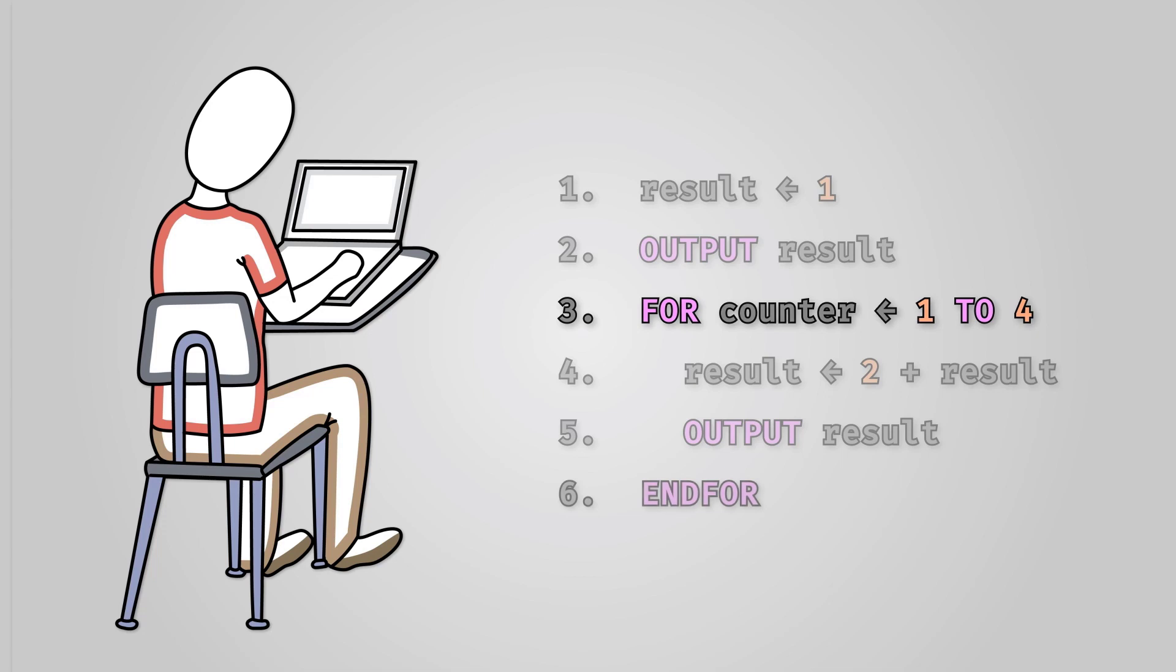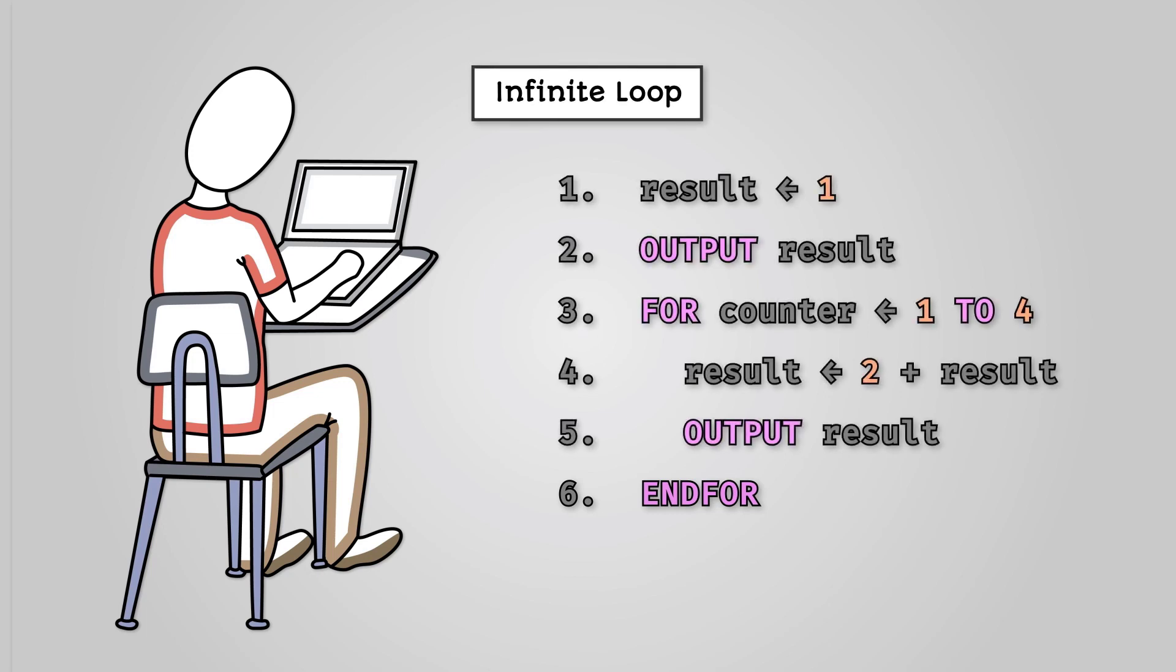Then on line 6 we have the end for statement. At this point the program adds 1 to the counter variable and loops to the beginning. If we didn't do this our program would be stuck in an infinite loop. This is where the loop would never reach the condition for the loop to end.